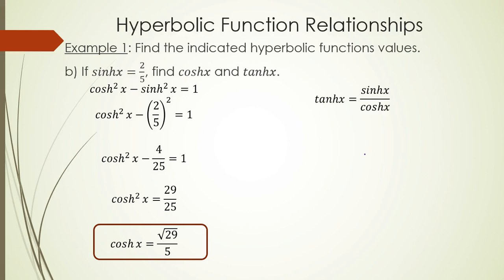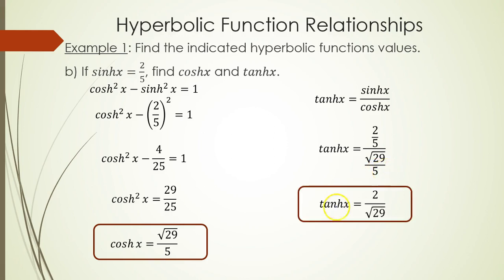To find tangent, hyperbolic tangent equals hyperbolic sine over hyperbolic cosine. That's 2/5 divided by (square root of 29)/5, which gives hyperbolic tangent equals 2 over the square root of 29. I'm not too picky about whether you rationalize this — it's up to you. As long as you know how to use the hyperbolic functions to find other ones, you're good to go.